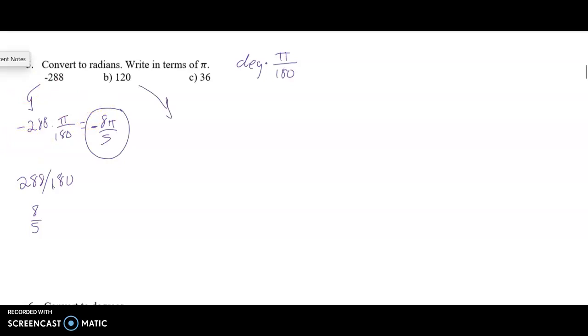So for the 120, we do the same thing. I take 120 and multiply it by pi over 180. Type it into your calculator or simplify it by hand, and you should get 2 pi over 3.